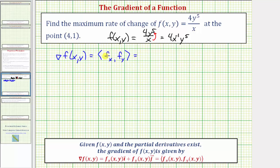To find the partial of f with respect to x, we differentiate 4x⁻¹y⁵ with respect to x, treating y as a constant. We multiply by negative one, giving negative 4x, then subtract one from the exponent, so the result is −4x⁻²y⁵.